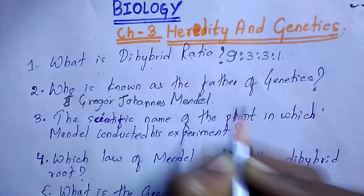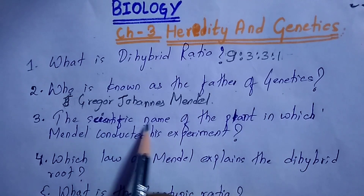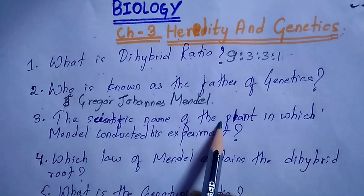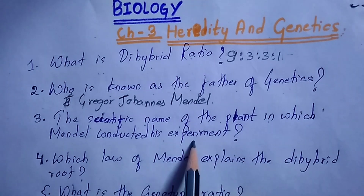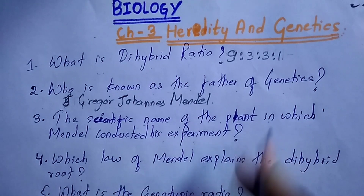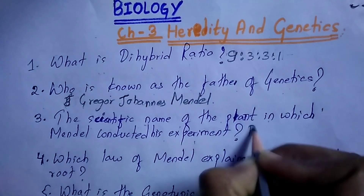Next question: what is the scientific name of the plant in which Mendel conducted his experiment? It is Pisum sativum.